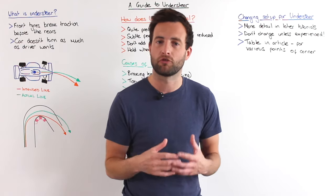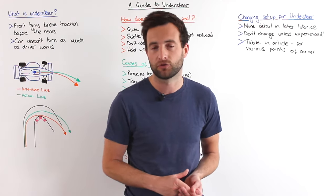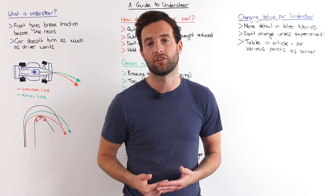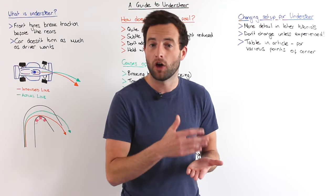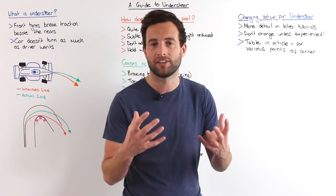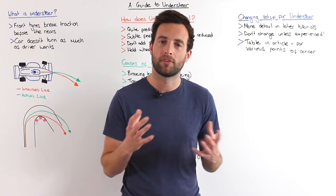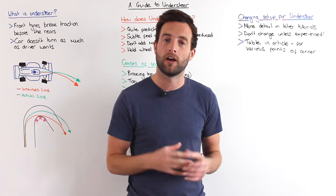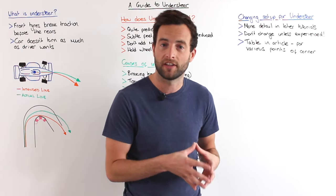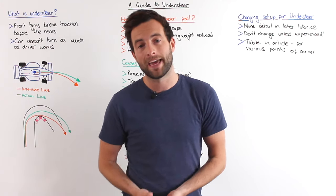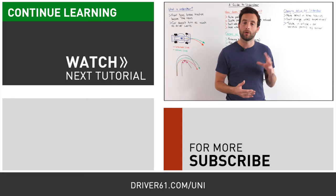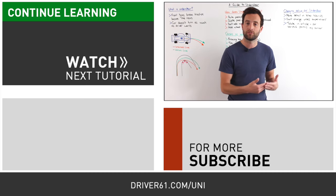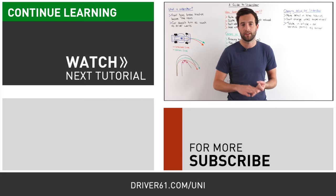One option is to get a professional driver to drive your car for half a day. A good driver can do three or four laps and give you advice on what changes should be made. You continue this process a few times, making three, four, or five changes, hopefully moving in the right direction with the setup. In the article below there's a table of understeer issues and potential setup changes, covering what you can change at turn-in, apex, and exit to reduce understeer.